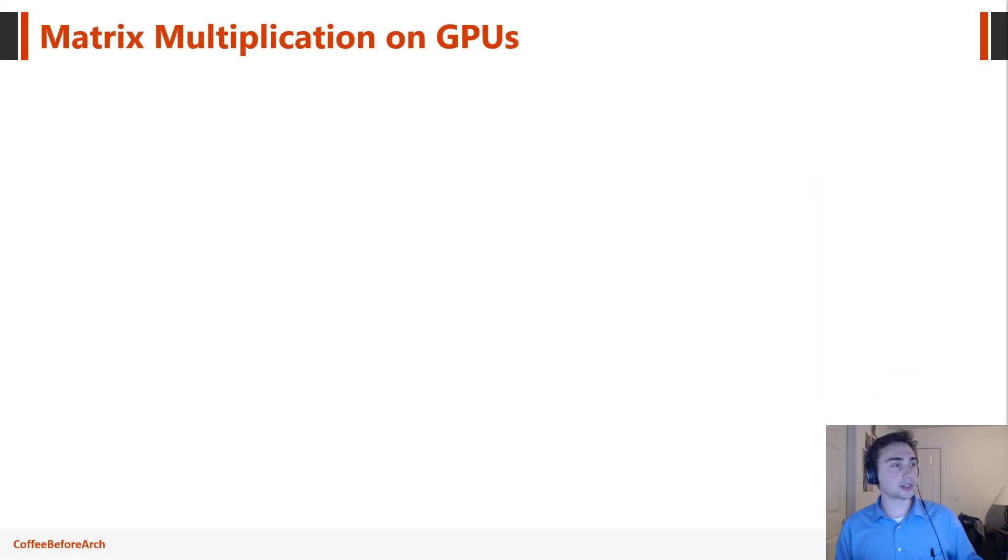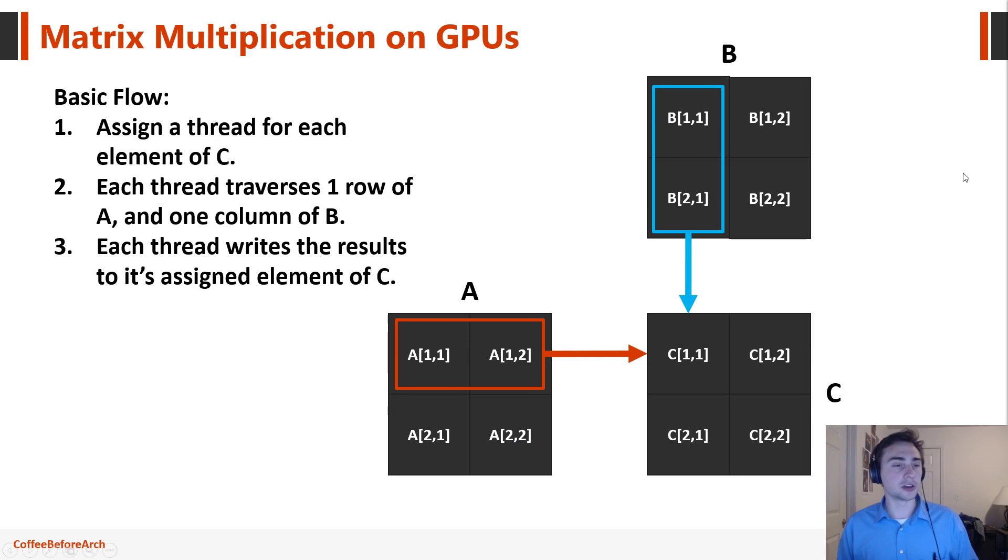So how is this going to look like on GPUs? So using the same kind of diagram, our basic thought will be for every single output, every element of our result matrix C, we will assign one single thread. So this single thread will traverse an entire row of A and an entire column of B in order to calculate that sum of products to get a single element of C, like we say here.